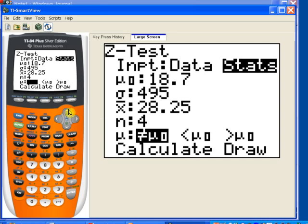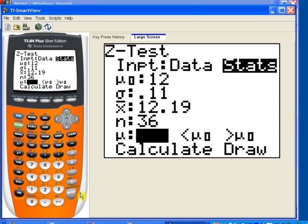And now, we just go down through and fill in the values that we know. First, the null hypothesis is 12. And then, the standard deviation is 0.11. The sample mean is 12.19. And the sample size was 36. And then, down below, we want to know what type of test we want to put in, whether it be a two-tail test, the first option, a left-tail test...